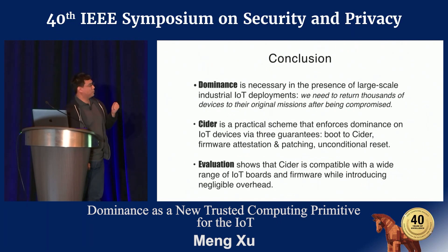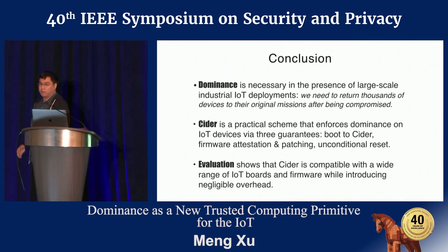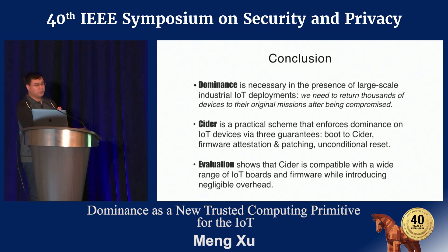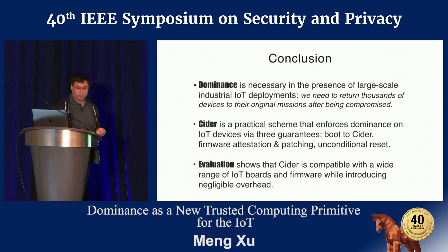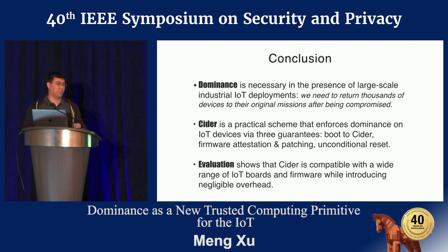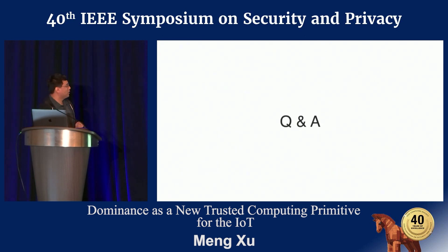In conclusion, dominance is very necessary in the presence of large-scale IoT deployments — we need a scheme to return thousands of identical devices back to their original mission. CIDR is a practical scheme that enforces dominance, achieved through three guarantees: booting to the CIDR trusted bootloader, firmware attestation and patching, and unconditional reset. Evaluation shows CIDR is compatible with a wide range of boards and firmware, introducing negligible overhead. Thank you for your attention. I'm happy to take questions.